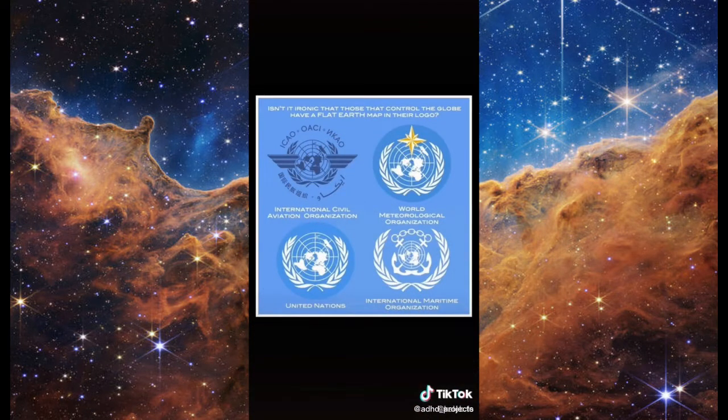The claim is: 'Flat earth is dumb, huh? But four of the most powerful organizations in the world have it as their logo.' It is dumb — and that's not a flat earth map. That is an azimuthal equidistant map with the North Pole at the center. It's used to show unity among nations and that no one nation is more important than another. The Mercator projection distorts countries — for instance, Greenland appears much larger than it actually is. Azimuthal projection maps are used to promote unity across nations.